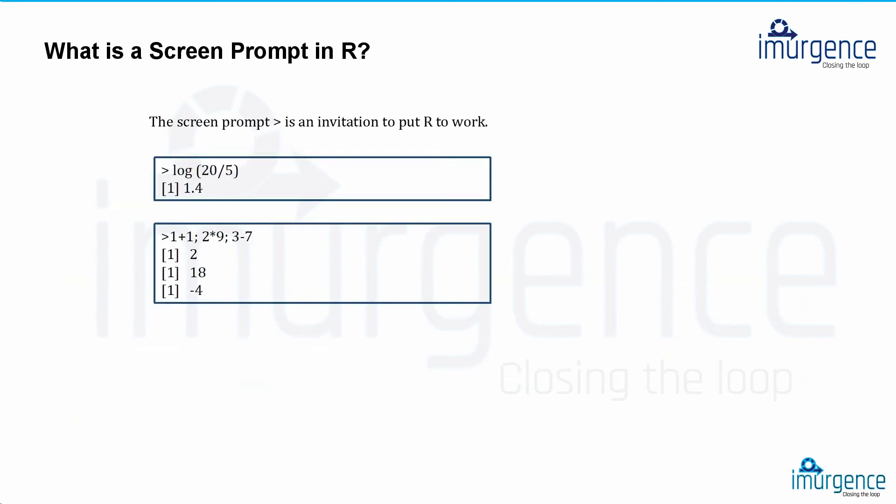Now when you see on the screen a prompt like the greater than sign, usually you won't see this on the script window. This would be seen only in the console window. So if you see a prompt sign with the greater than, that means R is asking you to give an input. That's where you will write your codes. So when you say over here log of 20 by 5, it's indicative that you are asking R to execute a log of 20 by 5. And over here log means log to the base e, that's a natural logarithm, and not the log to the base 10, not log to the base 2. So that's the value 1.4 as you can see on the screen.